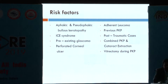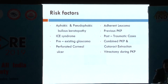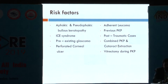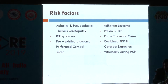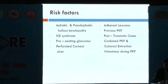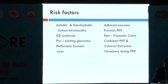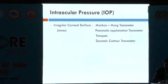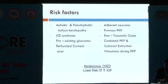The risk factors which lead to increase in intraocular pressure — the factors for which we do keratoplasty — are aphakic and pseudophakic bullous keratopathy, ICE syndrome, pre-existing glaucoma, perforated corneal ulcer, adherent leucoma, previous keratoplasty, post-traumatic cases, combined keratoplasty with cataract extraction, and vitrectomy done during penetrating keratoplasty. Some factors like keratoconus and congenital hereditary endothelial dystrophy lead to lower risk of increase in IOP.